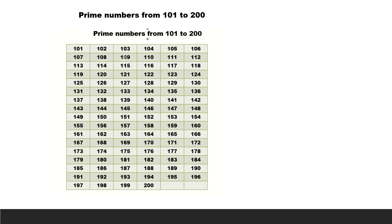Now we look at prime numbers from 101 to 200. In the 6-column grid, the second column numbers are even numbers. Even numbers are not prime as they have more than 2 factors, so cross out all even numbers in column 2. The 4th column numbers are also even — cross them out. The 6th column numbers are also even — cross those out too.